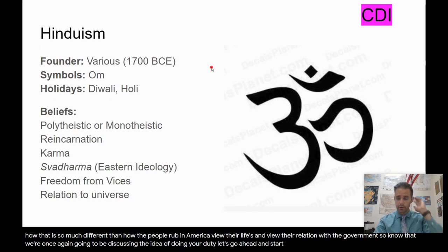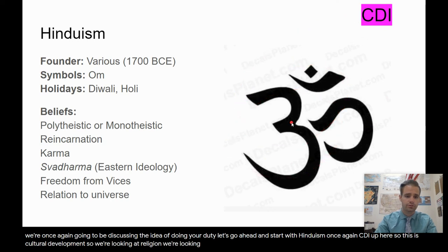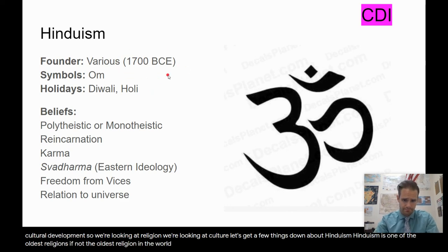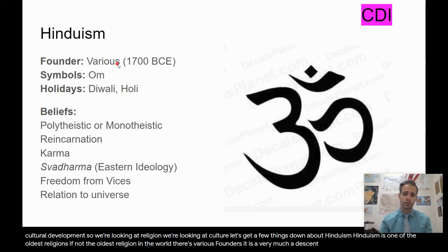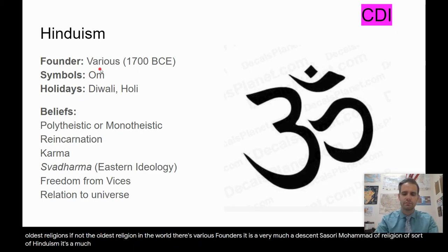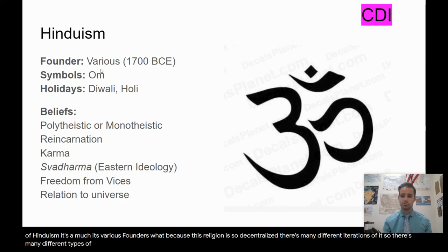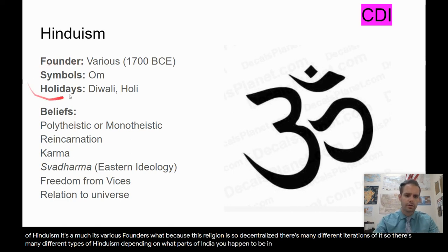Let's go ahead and start with Hinduism. We're looking at religion and cultural development. Hinduism is one of the oldest religions, if not the oldest religion, in the world. There are various founders — it was very much a decentralized religion, so there isn't a single Jesus or Mohammed figure. Because this religion is so decentralized, there are many different iterations of it, depending on what part of India you happen to be in.